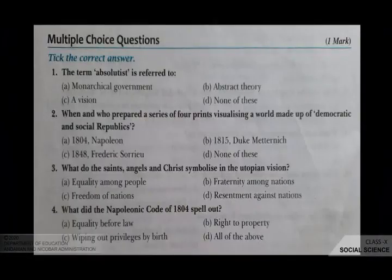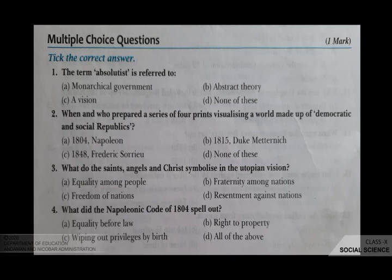Just have a look on your screen. This is MCQ. The first question is: the term 'absolute state' is referred to — your options are A monarchical government, B abstract theory, C a vision, D none of these. The correct answer is A, monarchical government.